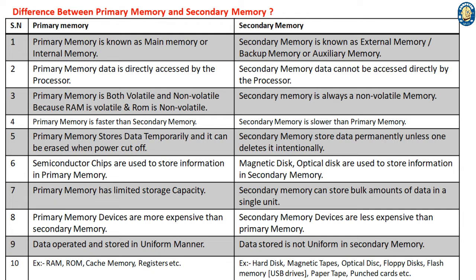7. Primary memory has limited storage capacity. Secondary memory can store bulk amounts of data in a single unit. 8. Primary memory devices are more expensive than secondary memory devices. 9. Data is operated and stored in a uniform manner in primary memory. Data stored is not uniform in secondary memory.